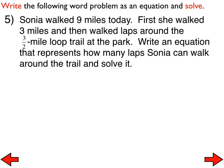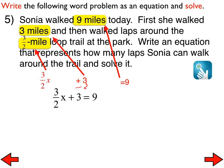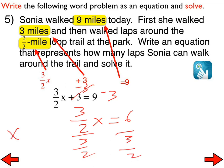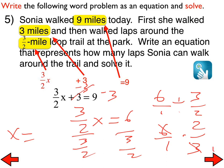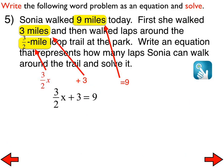Problem number 5 leads us to an equation that looks like 3 halves x plus 3 equals 9. We subtract 3 from both sides, getting 3 halves x equals 6. We divide both sides by 3 halves, and 6 divided by 3 halves turns into 6 times 2 thirds. We can do a little cross-dividing, and the answer — how many laps — is that Sonia can walk 4 laps. We've done enough of this without fractions that having fractions in there shouldn't basically change what we are doing.